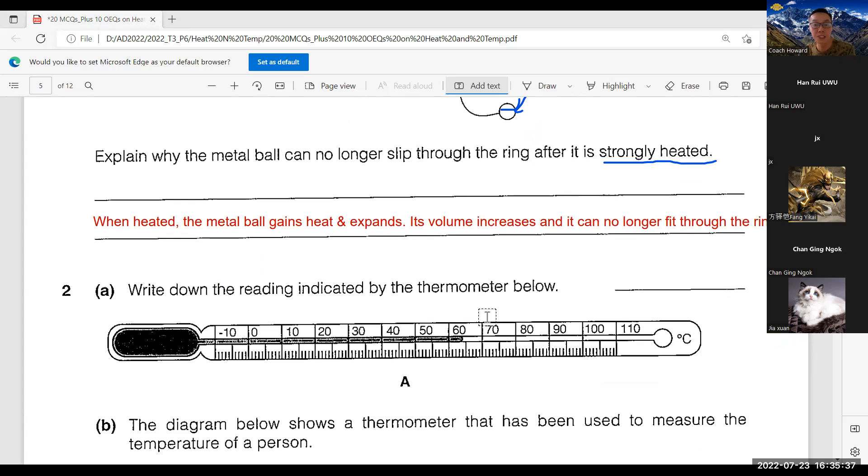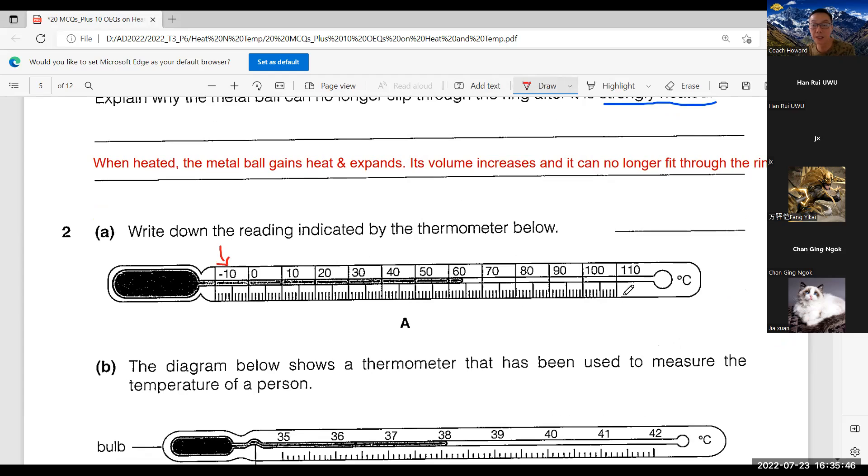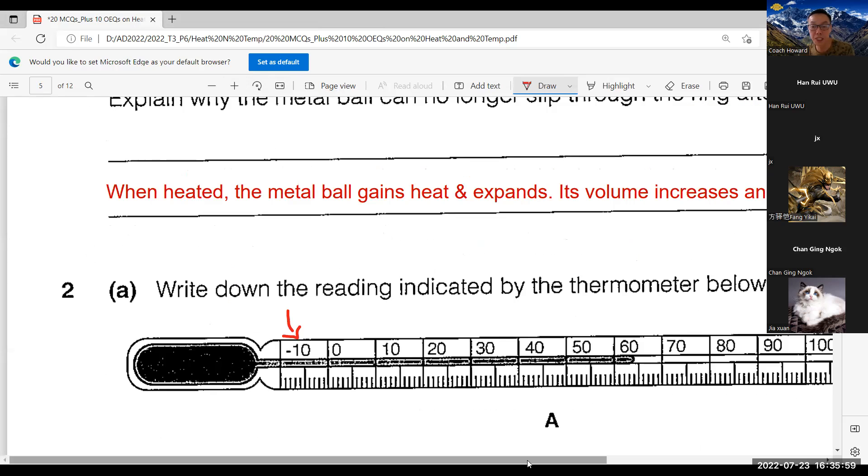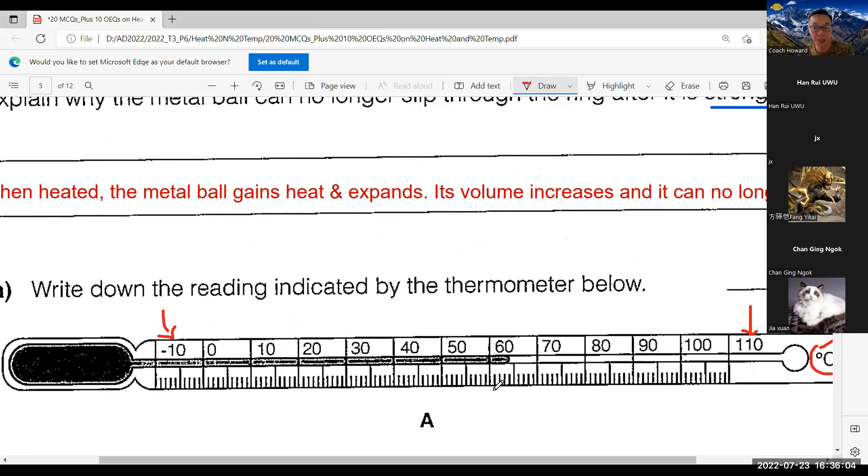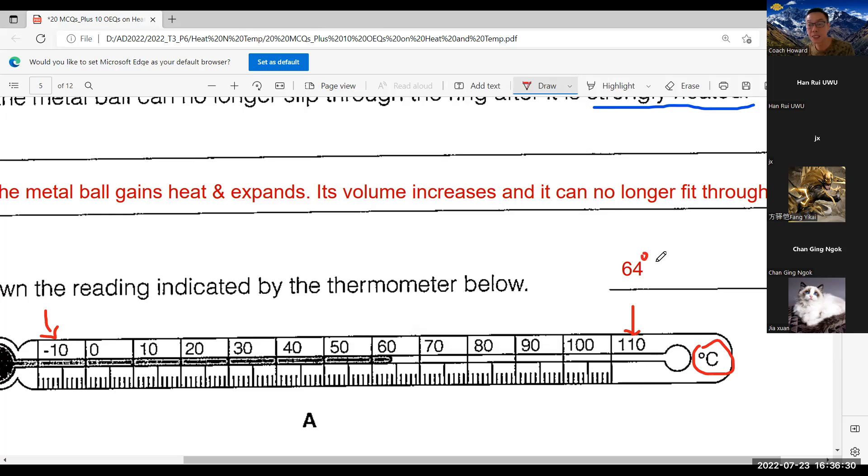Next question, you can see this is actually a laboratory thermometer. The minimum reading you can take is minus 10, and the maximum is 110 degrees Celsius. Each mark represents one degree Celsius. If you see carefully, this mercury has not touched 65. It's one marking before 65. Therefore, the answer is 64 degrees Celsius.